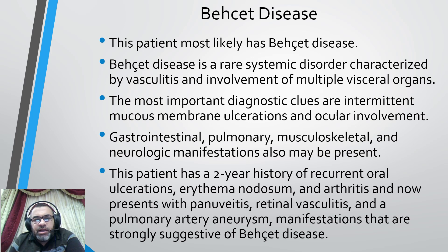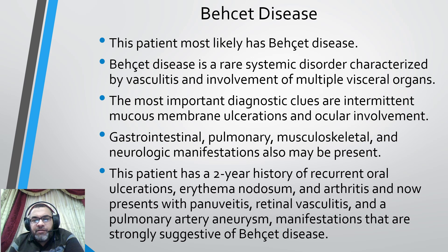The patient most likely has Behçet's disease. Behçet's disease is a rare systemic disorder characterized by vasculitis and involvement of multiple visceral organs. The most important diagnostic clues are intermittent mucous membrane alterations and ocular involvement; gastrointestinal, pulmonary, musculoskeletal, and neurological manifestations may also be present. The patient has a two-year history of recurrent oral ulcerations, erythema nodosum, and arthritis, and now presents with panuveitis, retinal vasculitis, arthritis, and a pulmonary artery aneurysm — all strongly suggestive of Behçet's disease.